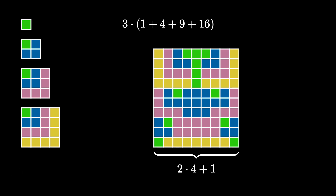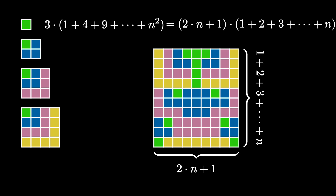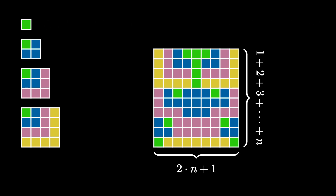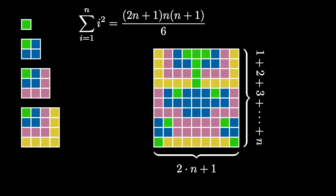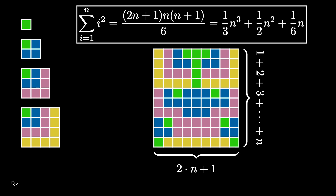Three total copies of the sum of the first four squares fill in a rectangle. The base of this rectangle is 2 times 4 plus 1, and the height is 1 plus 2 plus 3 plus 4. Therefore, 3 times the sum of the first four squares equals (2×4+1) times (1+2+3+4). In general, 3 times the sum of the first n squares equals (2n+1) times the sum of the first n natural numbers. Using the known formula for the triangular numbers, the sum of the first n squares equals (2n+1)·n·(n+1)/6, which simplifies to (1/3)n³ + (1/2)n² + (1/6)n — a polynomial of degree 3.